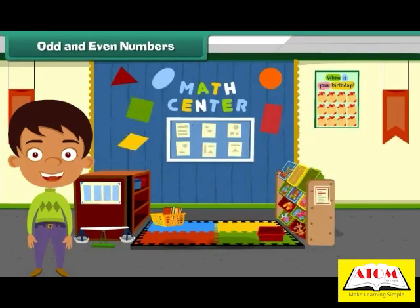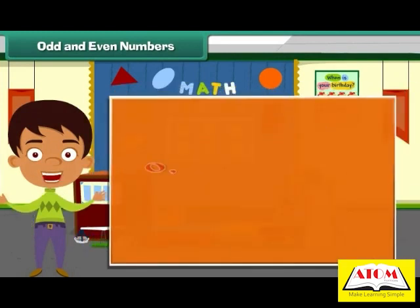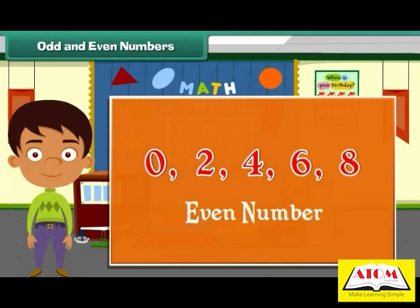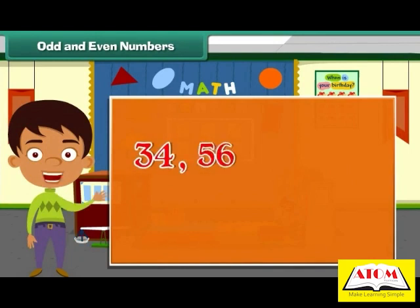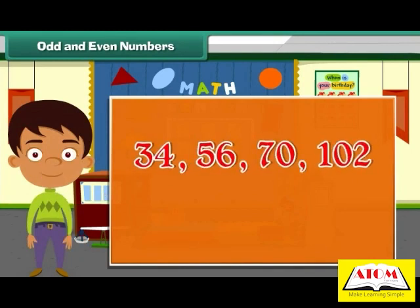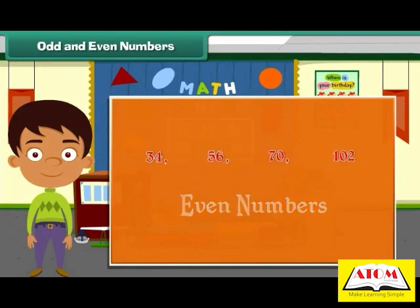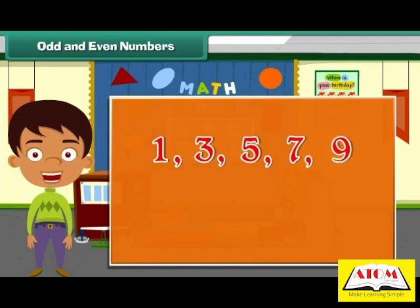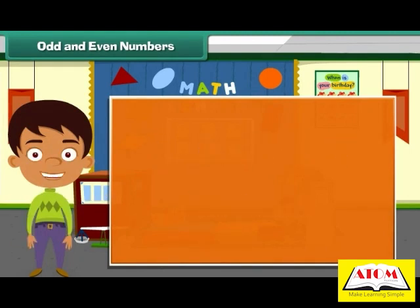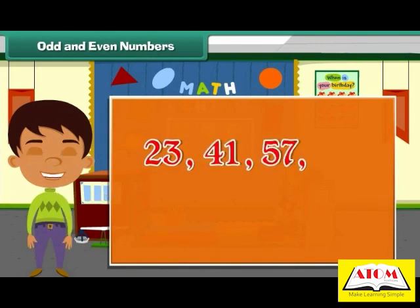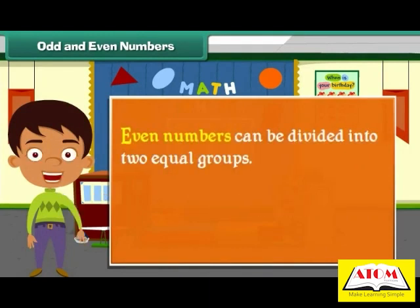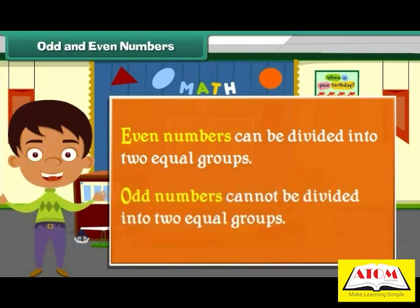Odd and even numbers. Any number that has a 0, 2, 4, 6, or 8 in the ones place is called an even number. For example, 34, 56, 70, and 102 are all even numbers. Even numbers can be divided into two equal groups. Odd numbers cannot be divided into two equal groups.